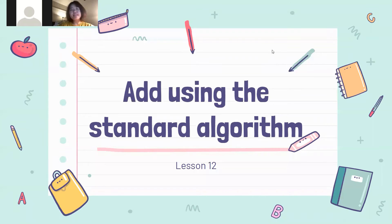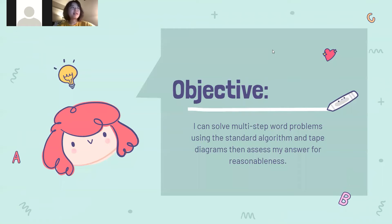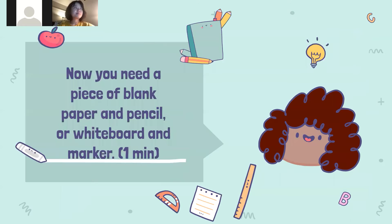Hello everyone, this is Mrs. Chen, nice to see you today. So today we're going to learn about how to add using the standard algorithm. Today's objective is: I can solve multi-step word problems using the standard algorithm and tape diagrams that assess my answer for reasonableness. You will need a piece of blank paper and pencil or whiteboard and marker. I will give you one minute to go get those materials.